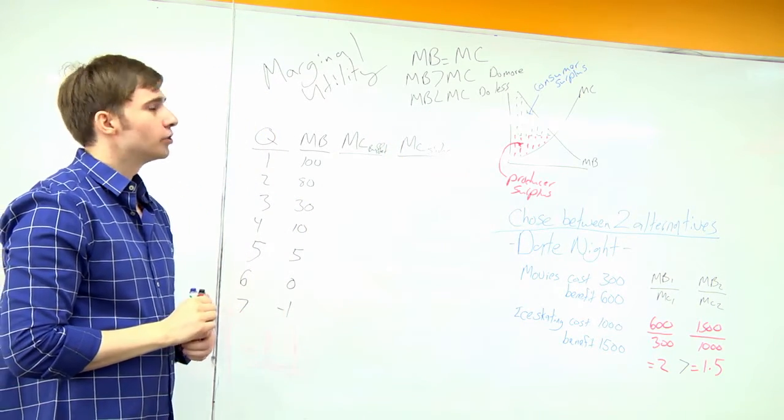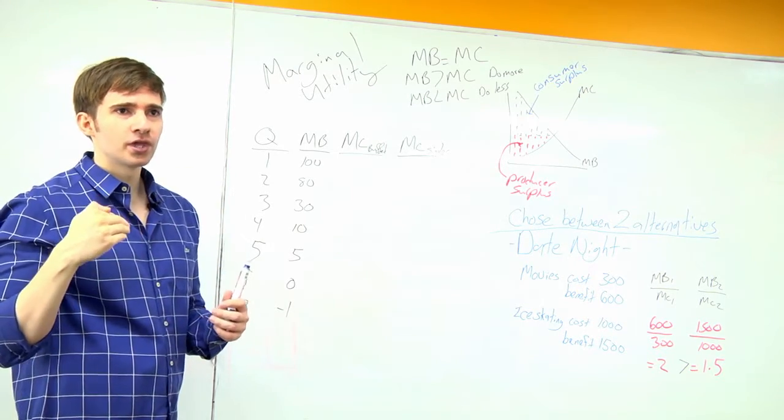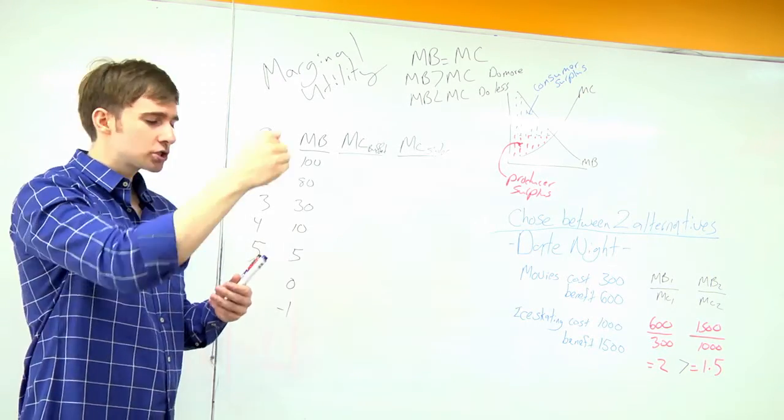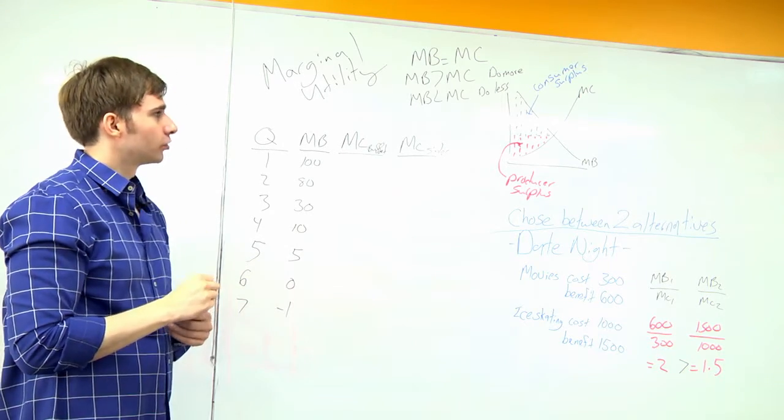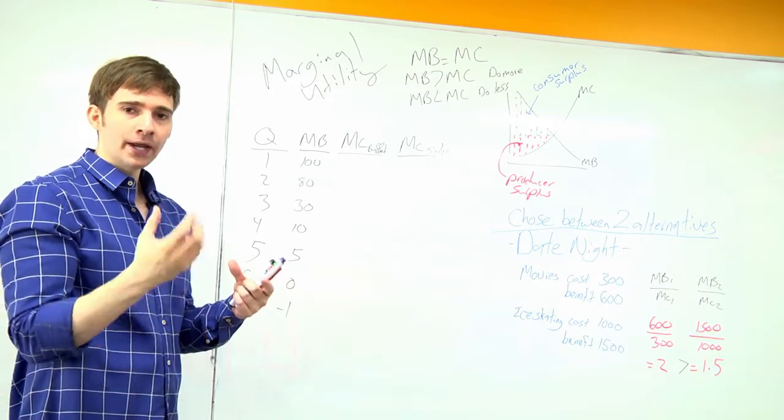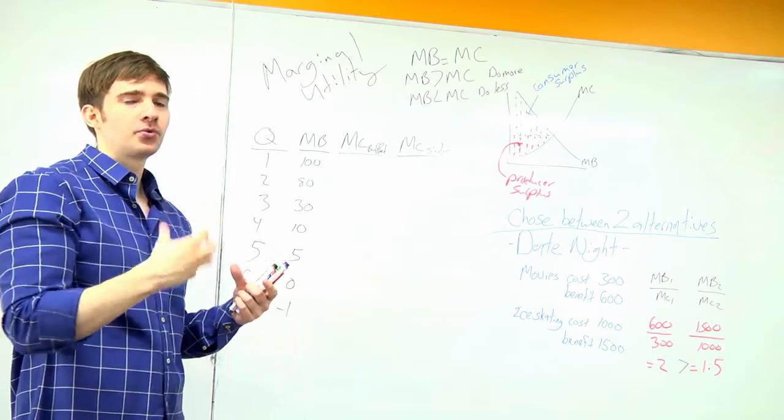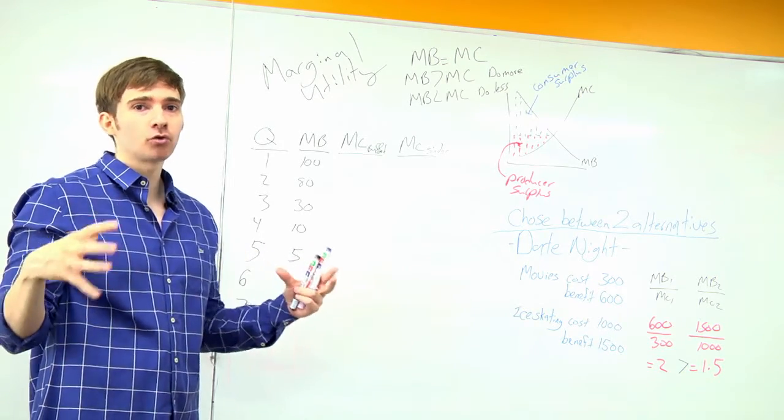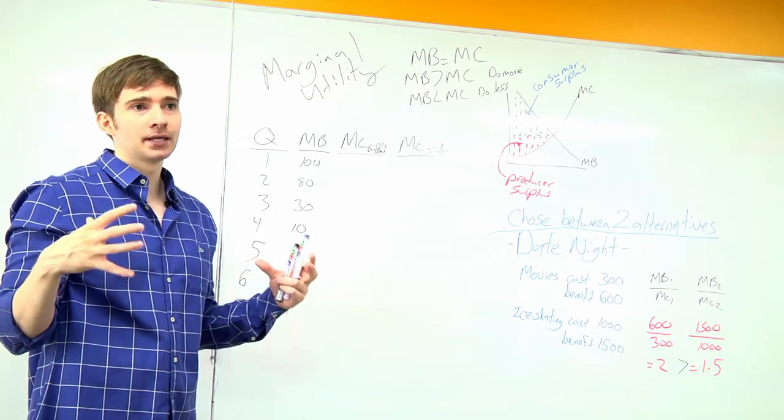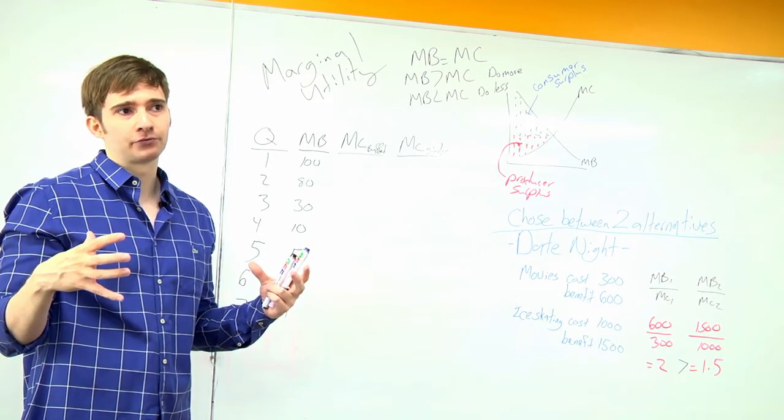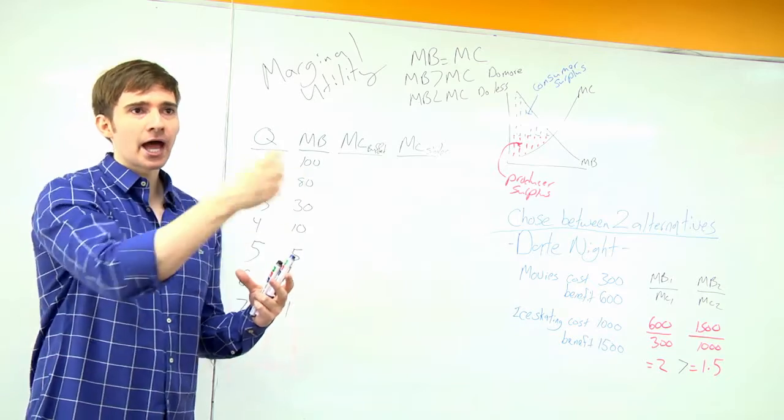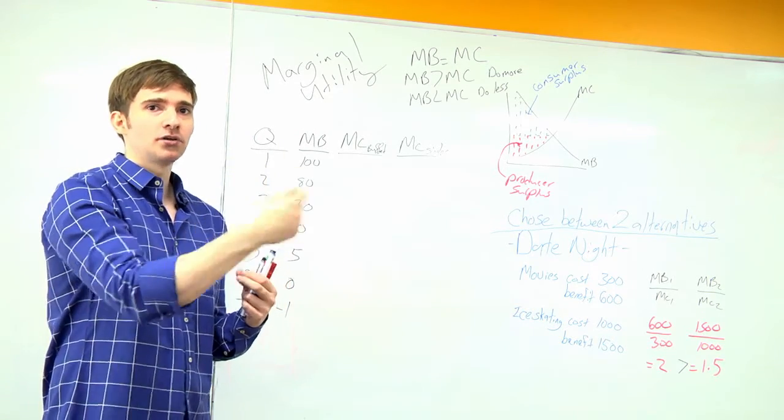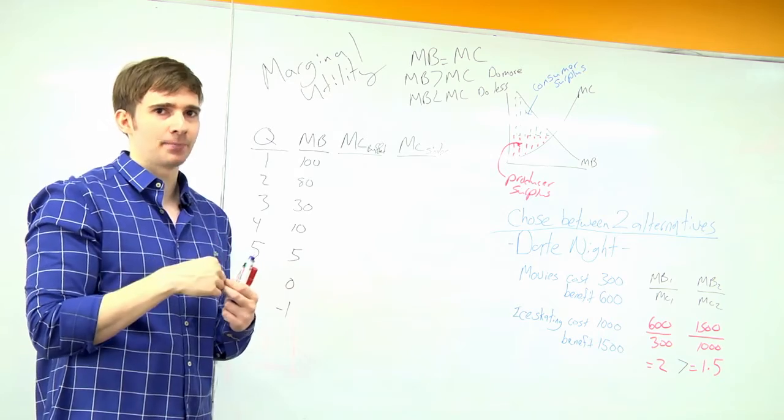Just a review on marginal. Marginal is for the next unit, the additional unit. So if I get one apple and then two apples and three and four and five apples, my total utility, my total happiness is getting happier and happier the more apples I have. But each apple that I get, each additional apple, is making me less and less happy.